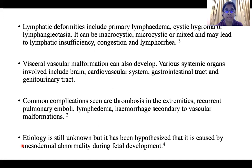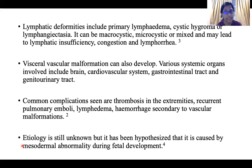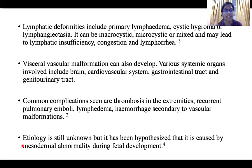Visceral vascular malformations can also develop, and the various systemic organs involved include the brain, cardiovascular system, gastrointestinal system, or genitourinary system. Common complications include thrombosis of vessels in the extremities, recurrent pulmonary emboli, lymphedema, and hemorrhage secondary to vascular malformations. The etiology is still unknown, but it has been hypothesized that it could be caused by a mesodermal abnormality during fetal development.